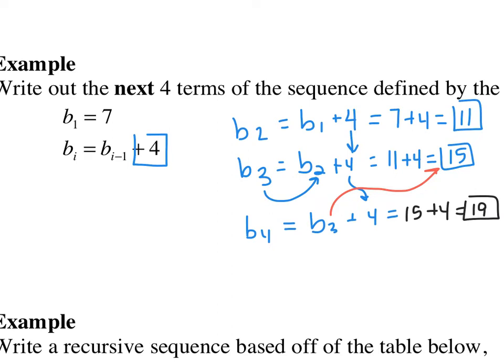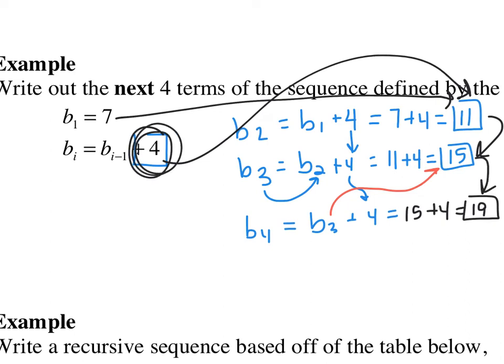And again, if you look, I am just adding 4 each time. 7 plus 4 is 11. 11 plus 4 is 15. 15 plus 4 is 19. All of that is coming from this 4.